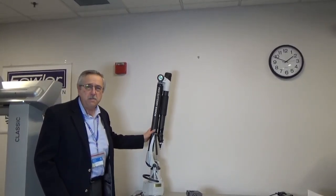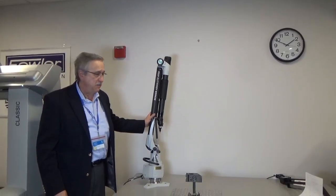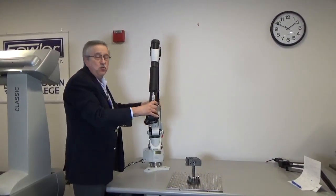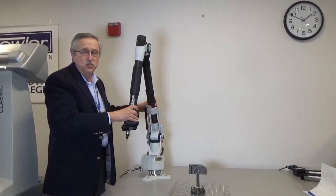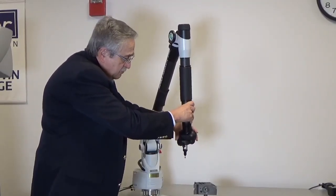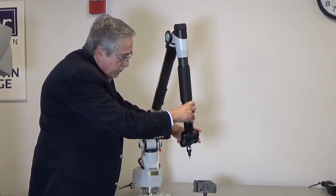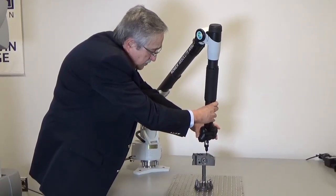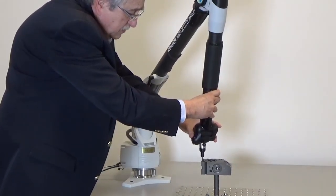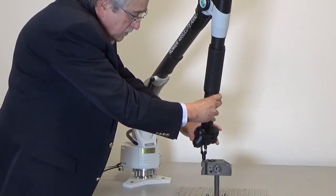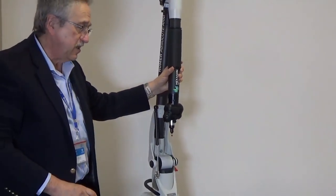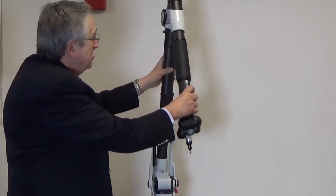This is a coordinate measuring machine or known as CMM. It's a portable unit and it's manually operated. It's used to make measurements on parts. As you can see here I can bring the probe, which is a Ruby probe, down into different features on this part and record that. Pick it up, put it in the center of this feature, and record that. This will automatically determine the distance between centers.